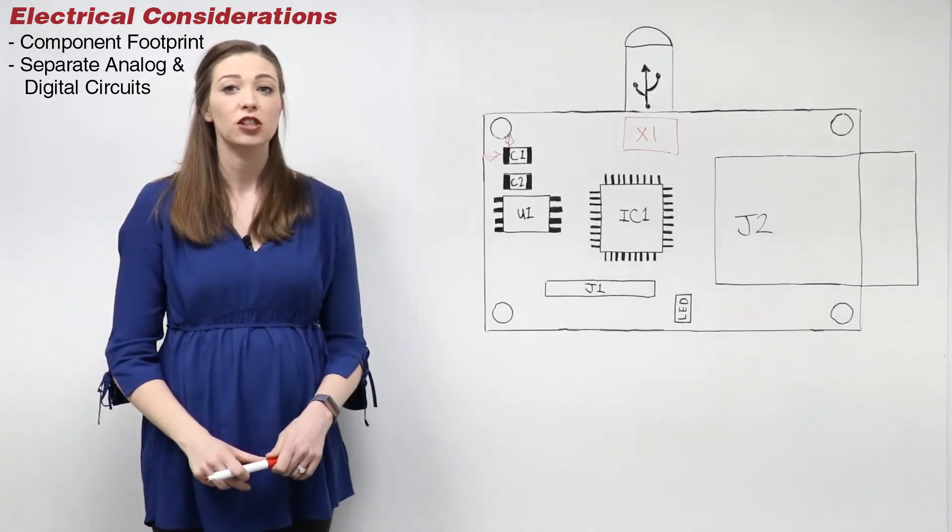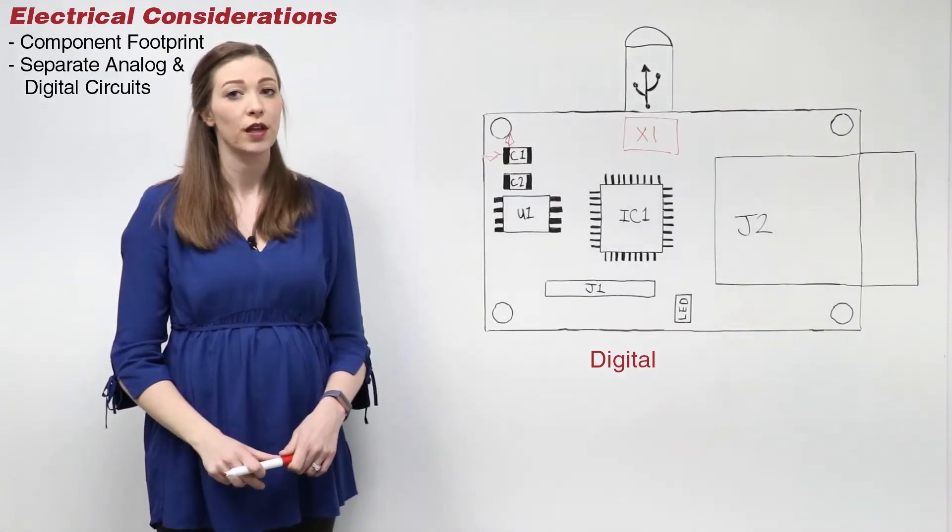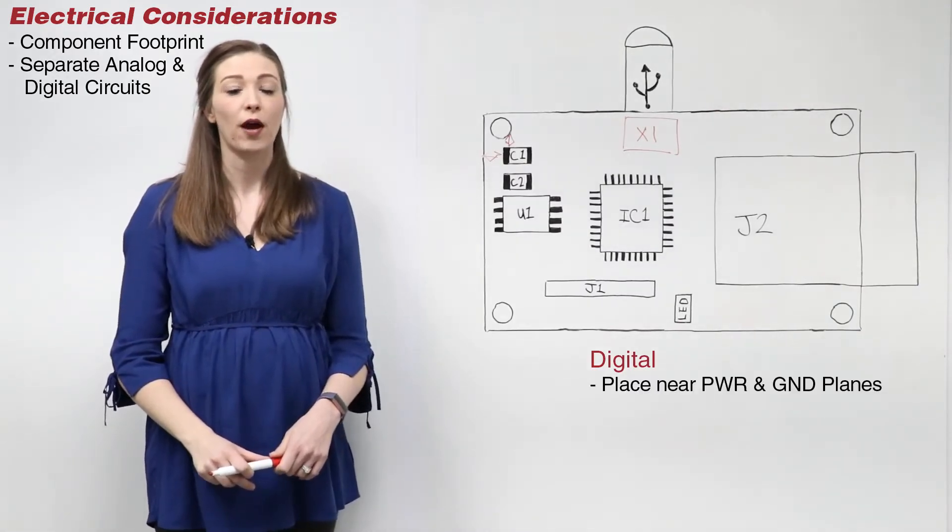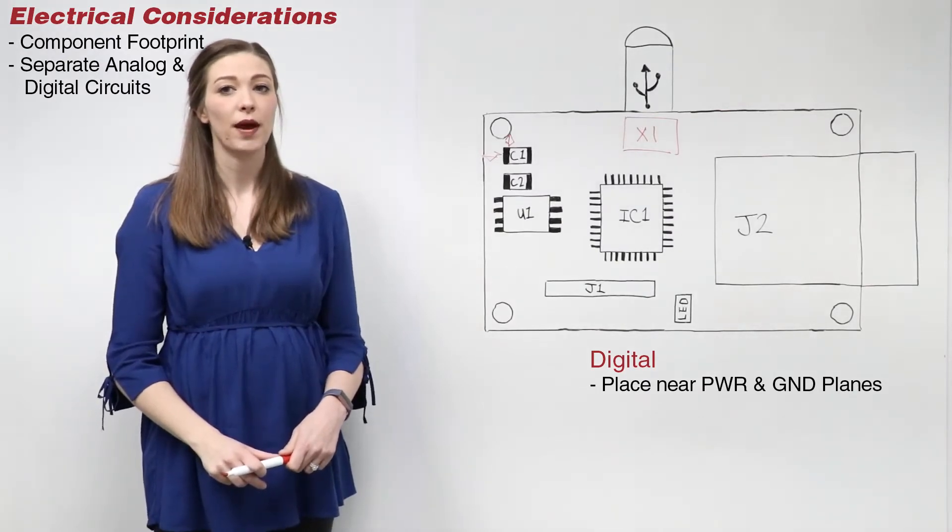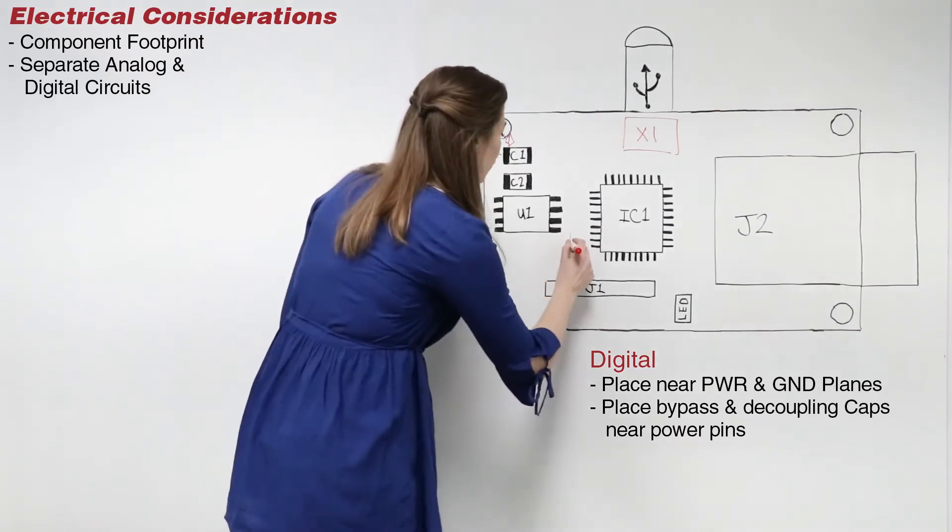Second, for digital layout, consider power distribution first. Place digital components near power and ground planes. Also, place bypass and decoupling capacitors close to the device power pins for best performance.